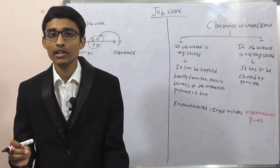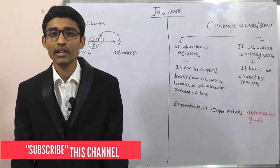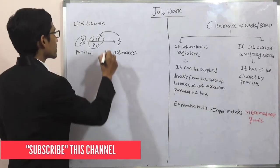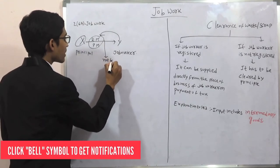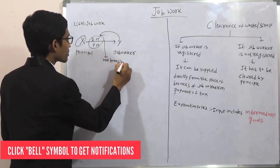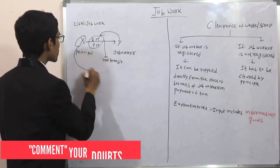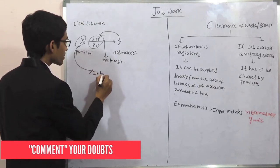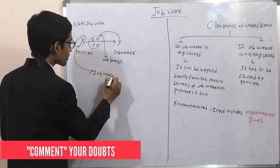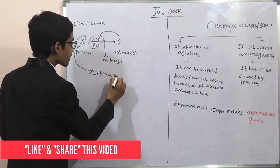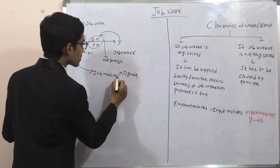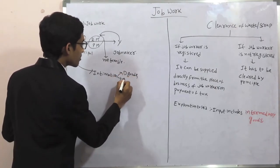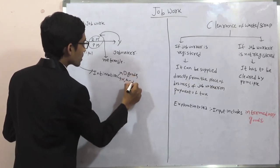X is transferring goods to Y to undertake some process by Y. In this case, this transfer is not taxable. Y has to give an intimation showing the description of goods, and the name and address of the job worker.